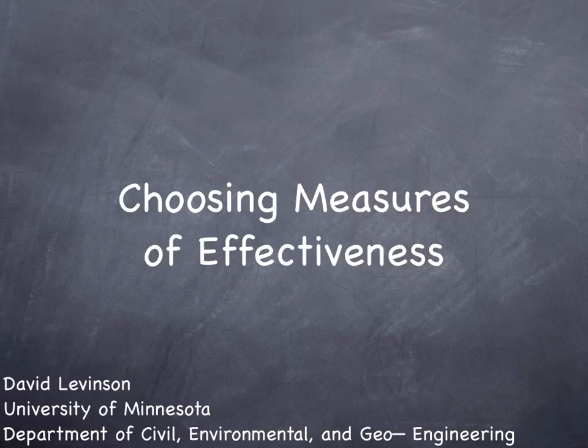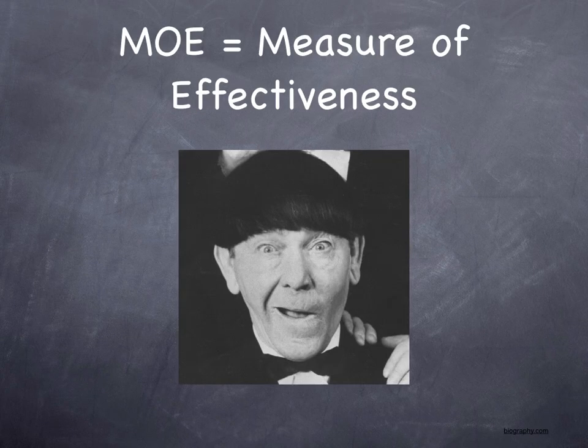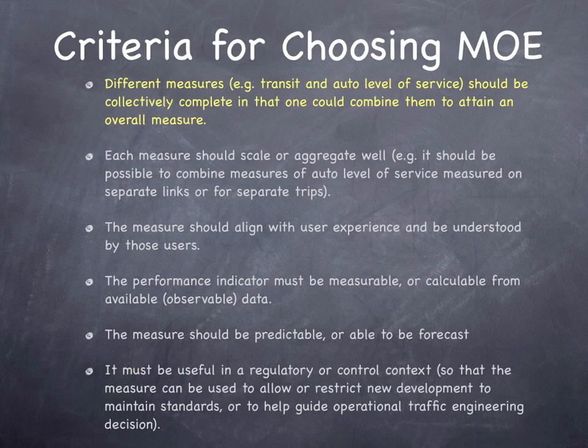This video discusses choosing Measures of Effectiveness, or MOE — how do we assess how well a system is performing? There is a Highway Capacity Manual that allows you to estimate level of service on a scale from A through F for different aspects of the transportation system.